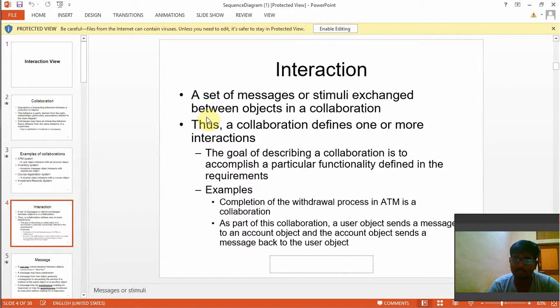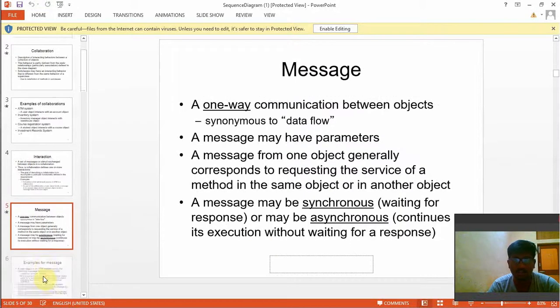What is meant by interaction? A set of messages or stimuli exchanged between objects in a collaboration. A collaboration defines one or more interactions. The goal of describing collaborations is to accomplish a particular functionality defined in the requirements. For example, the completion of the withdrawal process in an ATM is a collaboration. As part of the collaboration, the user object sends a message to an account object, and the account object sends a message back to the user object.